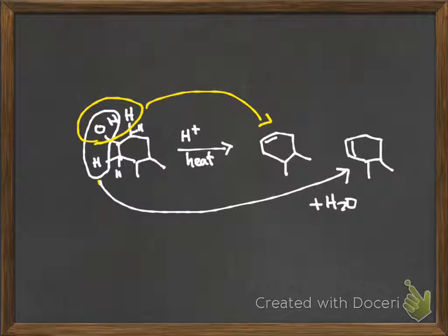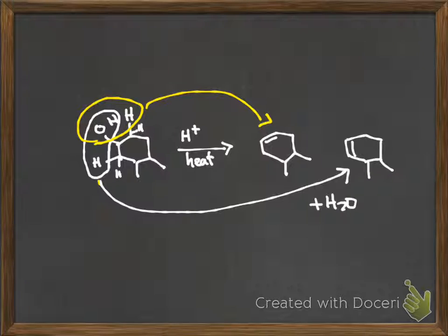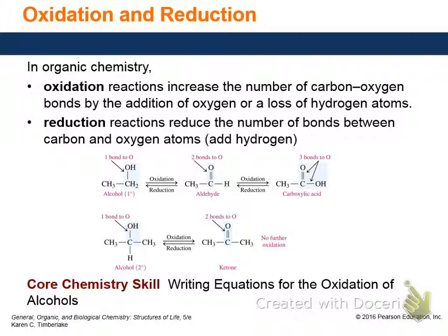There are two hydrogens on every carbon in a bond line drawing unless there's a methyl group. By the way, this is a completely different lecture than Monday's. If you want more examples, go watch the Monday lecture. I haven't figured out how to save the drawings I make as image files yet.